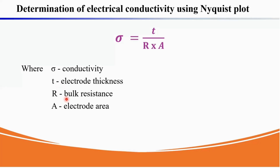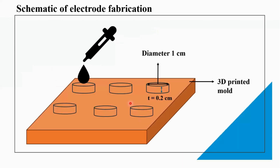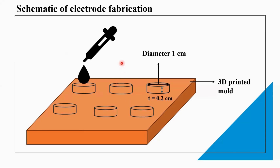Now let's see how to fabricate electrodes. To fabricate an electrode you should have a 3D printed mold where you can easily cast your synthesized material and keep it for drying, either at room temperature or in a hot air oven to accelerate the drying process. Depending on the type of material, the synthesis method can be different, but in my case I used a simple solution mixing method.